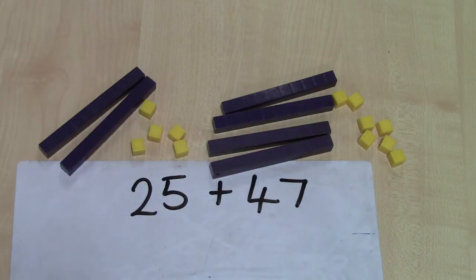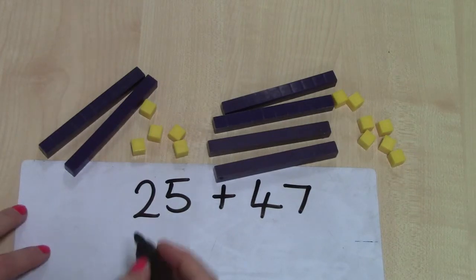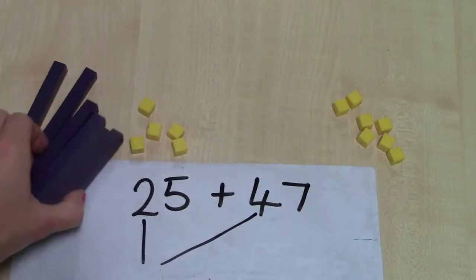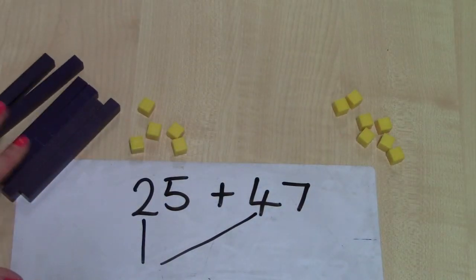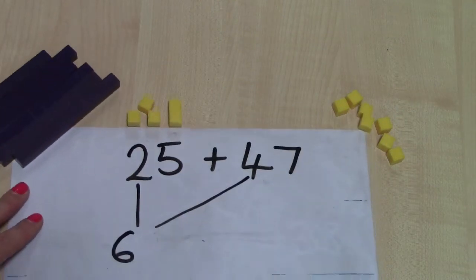So this time I'm going to start with my tens. So I'm going to add my two tens to my four tens. So two tens and four tens altogether, I've got six tens, and six tens means 60.